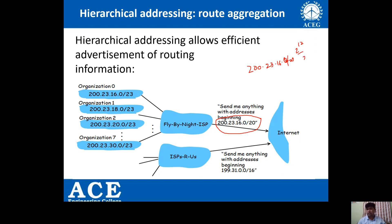The ISP tried to divide addresses among eight sub-organizations. The first organization has addresses starting at 16.0 up to 17.255. The second organization has address 200.23.18.0 up to 19.255. Each organization is provided with 2^9, which equals 512 addresses. This local ISP can make an arrangement to forward data to any of these IPs or devices connected to those IPs.